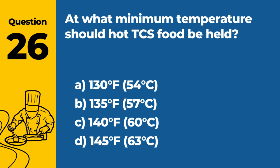Question 27: What is an example of a physical contaminant in food? A. Bacteria. B. Viruses. C. Metal shavings. D. Toxins. Answer: C. Metal shavings. Metal shavings are an example of a physical contaminant in food, which can cause injury or illness if ingested.